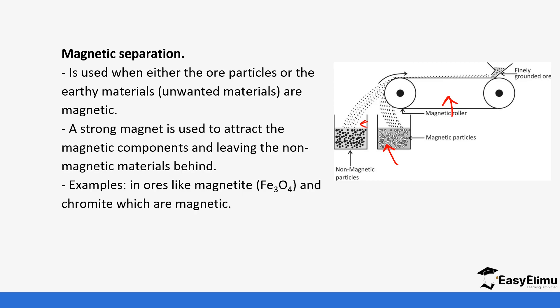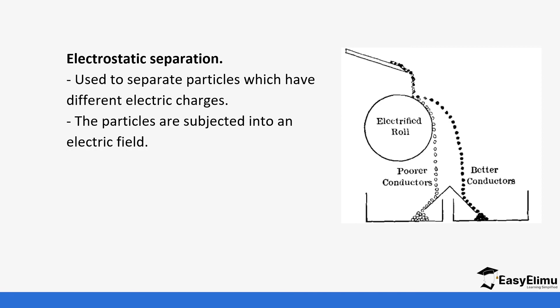Electrostatic separation is used to separate particles which have different electric charges. The particles are subjected to an electric field as you can see in the center. The oppositely charged particles follow different paths and can be separated. There are poor conductors and better conductors that move in different directions.